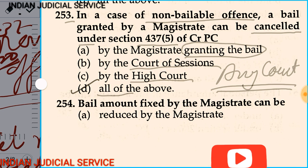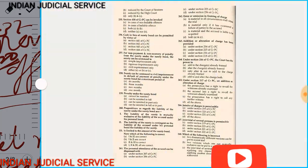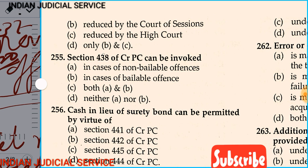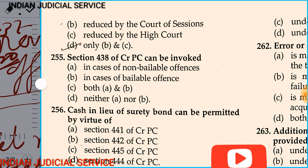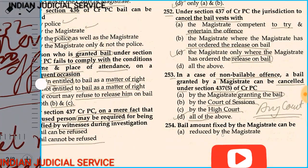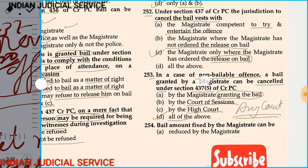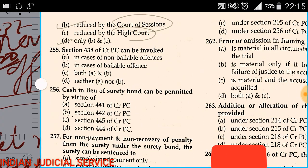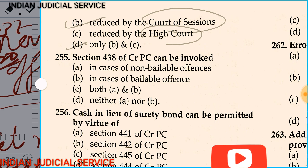Question number 254: The bail amount fixed by a magistrate can be — option A: reduced by the magistrate, option B: reduced by court of session, option C: reduced by high court, option D: only B and C. The answer is option D — the bail amount fixed by the magistrate can be reduced by the session court and the high court, not by the same magistrate.